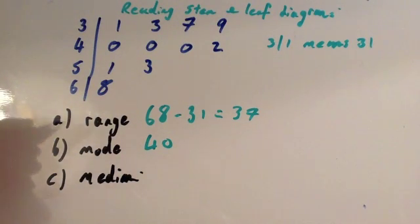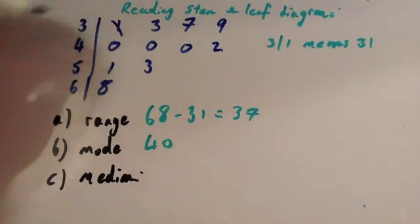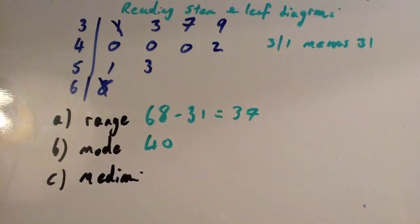So normally what I do is I cross off the smallest, cross off the biggest, cross off the smallest, cross off the biggest, until I'm left with the middle number. Okay, so let's cross off the smallest number, 31, and cross off the biggest number, 68.